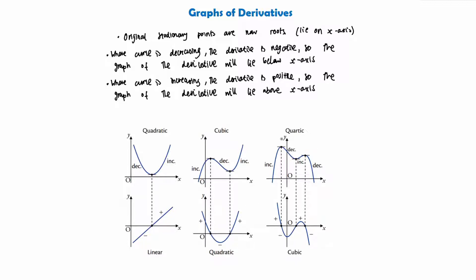The final example is a quartic. All stationary points are now roots, and all increasing and decreasing sections lie below or above the axis respectively.